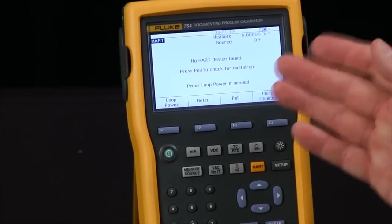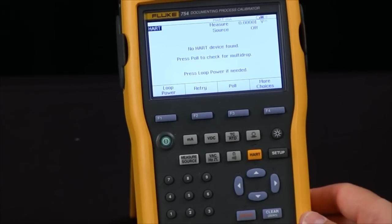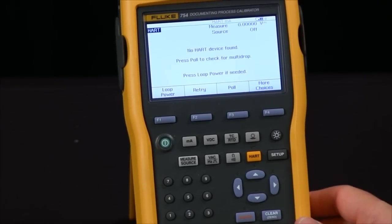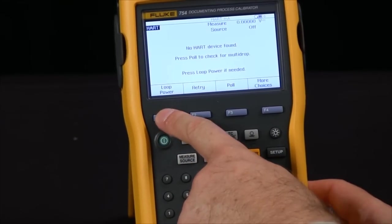I'm expecting an error message because it went out there searching for HART device and none found, but it does give me an option on the F1 key to turn on loop power.